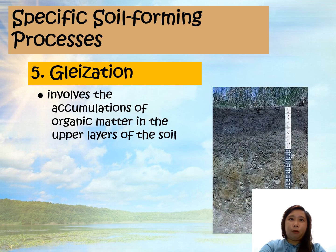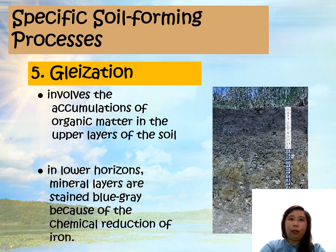This process involves the accumulation of organic matter in the upper layers of the soil. In the lower horizons, mineral layers are stained blue-gray because of the chemical reduction of iron.